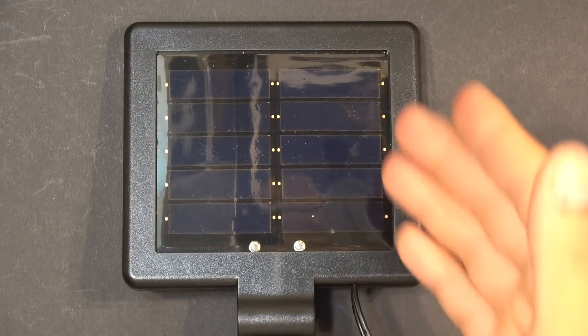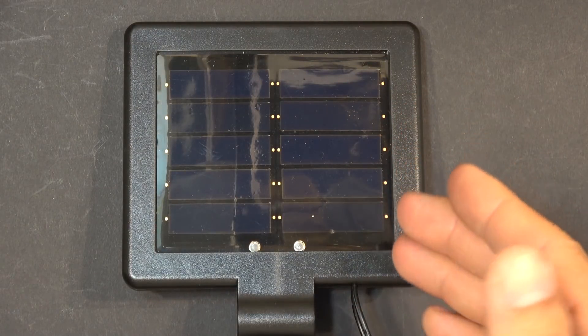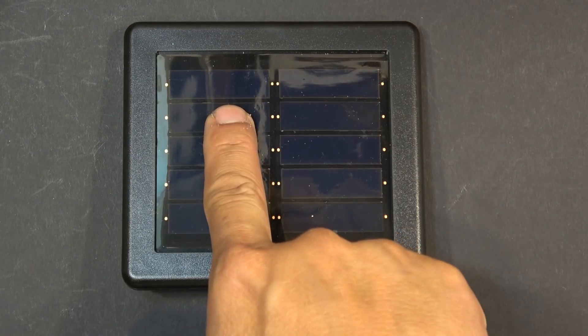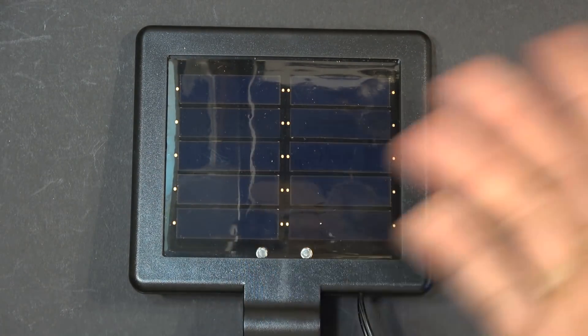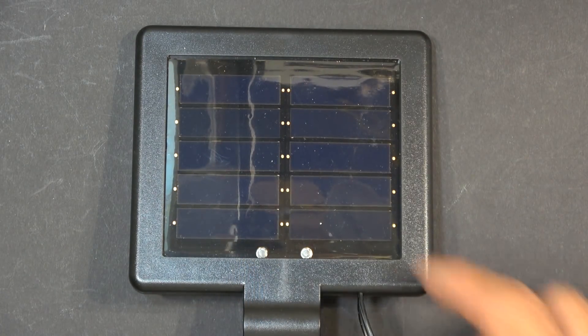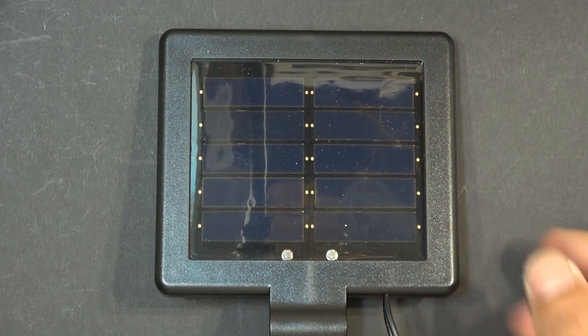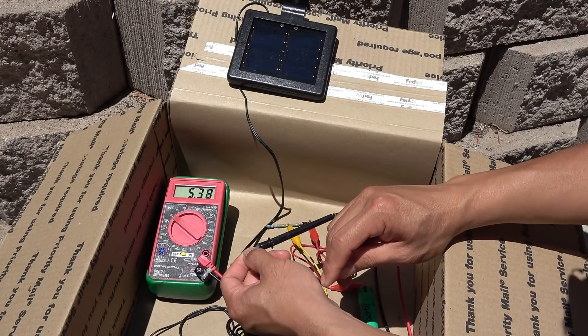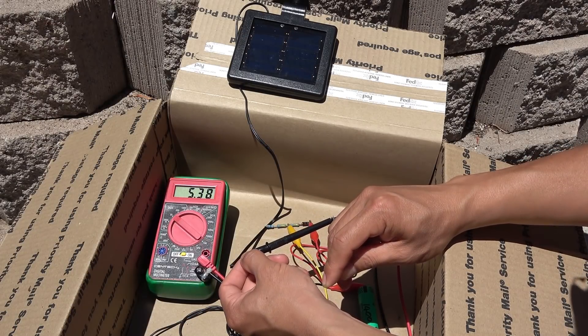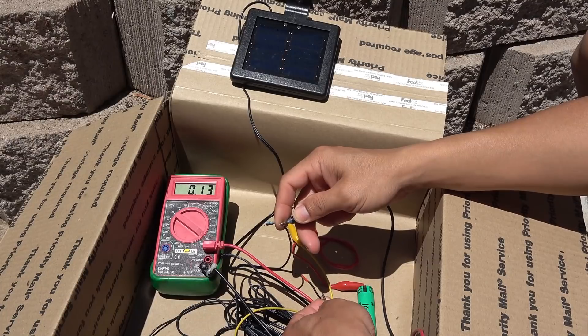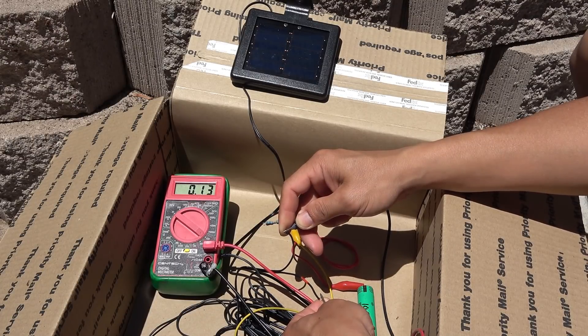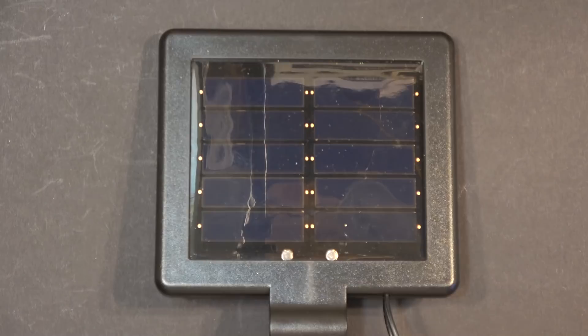This solar panel has 10 cells in it. Each cell produces about half a volt, actually a bit over half a volt, so 10 cells will give you a little bit over 5 volts. When not under load, the open circuit voltage is about 5.4 volts. The short circuit current is 0.13 amp.